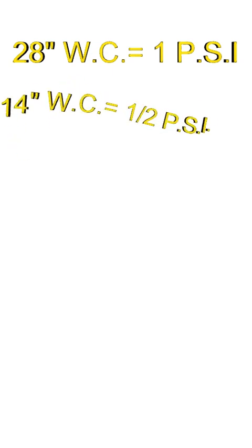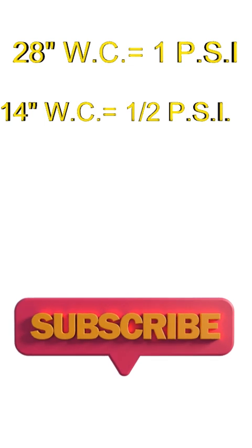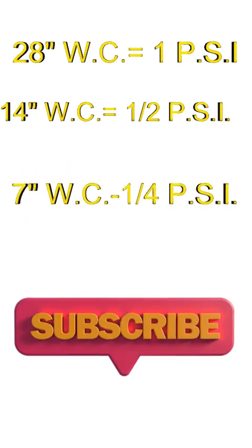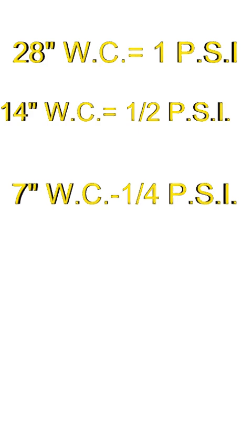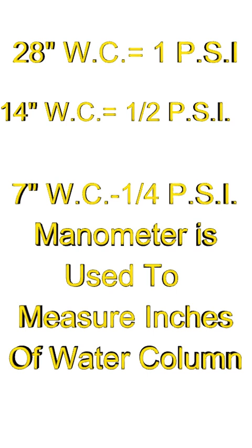We could also say 14 inches of water column equals a half psi, 7 inches of water column equals a quarter psi. And the manometer is used to measure low pressures such as used in gas installations. So I hope this helped you understand this and there will be more of this to come. Talk to you soon.